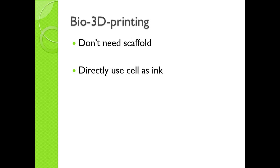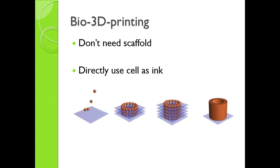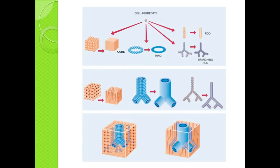The last method we will introduce is bio 3D printing. It is a very interesting method because it doesn't need a scaffold — we directly use cells as ink. Like this picture, we print each layer with cells and stack each layer to make a three-dimensional structure. We can make complex organs with this method too. First, print the basic structure, then aggregate them to make various shapes of tissue. Finally, aggregate again to make an organ. With this process, we can make more complex organs more rapidly.